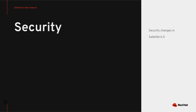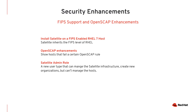Let's cover some of the security-related changes in Satellite 6.5. One of the big features is that we enable the ability to install Satellite on a FIPS-enabled host. Satellite inherits the FIPS level of RHEL. You need to do a fresh install of Satellite on a FIPS-enabled RHEL 7 host — you cannot take an existing RHEL 7 host with Satellite installed and then enable FIPS. Also, if you enable FIPS on Satellite, you must enable FIPS on all Capsules connected to that Satellite. Import-export of content from a FIPS-enabled Satellite to a non-FIPS-enabled one works as expected with no impact.